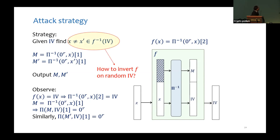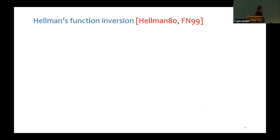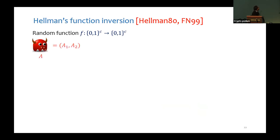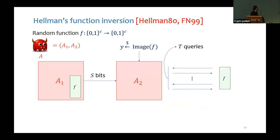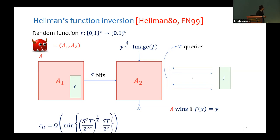If X is an inverse of IV under F, then the last c bits of π⁻¹ on (r zeros, X) equals IV, and the first r bits give M. This means the first r bits of the evaluation of π on (M, IV) are all zeros, and the same holds for M'. So given that we can invert F on IV and find two distinct pre-images, we have an attack. Function inversion in the pre-processing setting was first studied by Hellman and later by Fiat and Naor. We are interested in the case where F is a random function. Hellman gave an explicit adversary with advantage ε_H. However, there are several technical challenges: F is not actually a random function, the random IV may not be in the image of F, and Hellman's attack only guarantees one pre-image while we need two distinct ones.